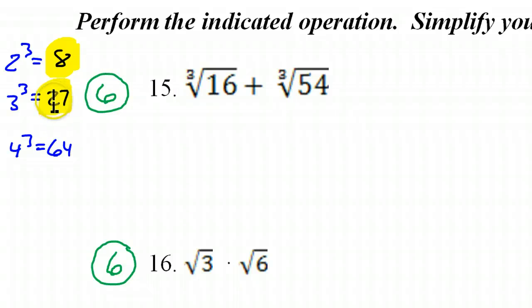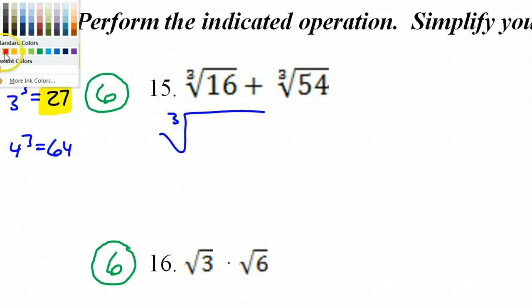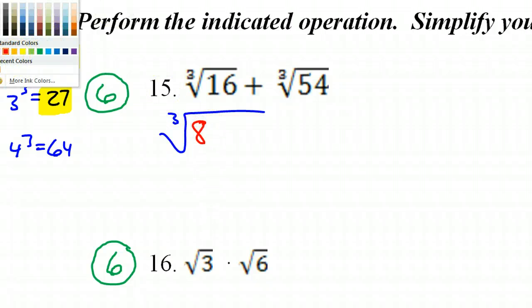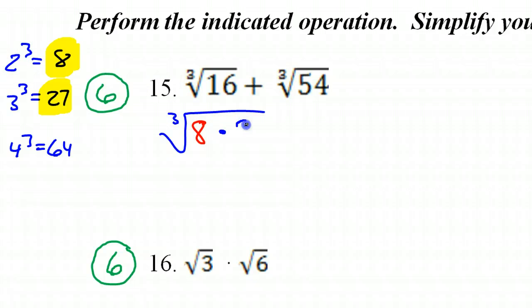We need these numbers to divide evenly into the 16 and the 54. So which one of these divides evenly into 16? Well, that would be 8. So let's rewrite this first part. So I've got the cube root of, and I'm going to put the 8 first in red, and that's 8 times 2. And in the next step, we will do the cube root of 8 and simplify it.